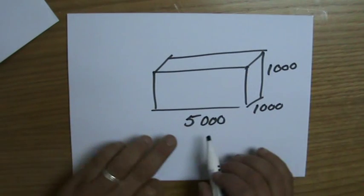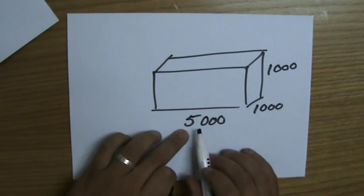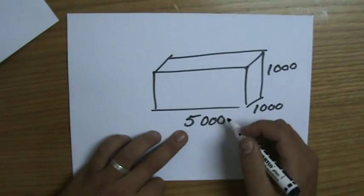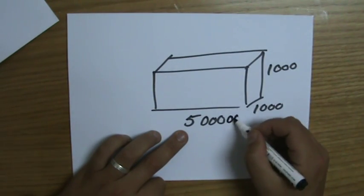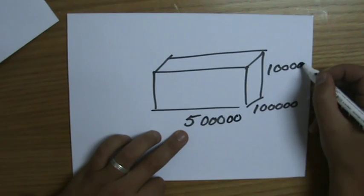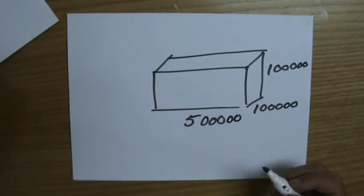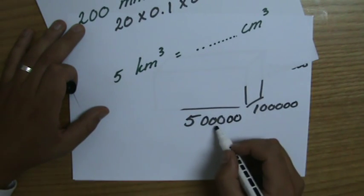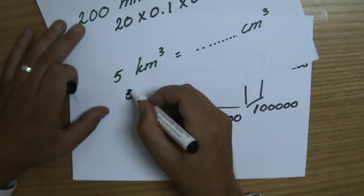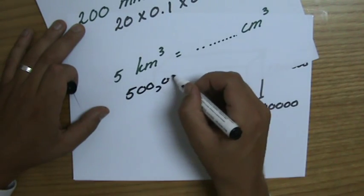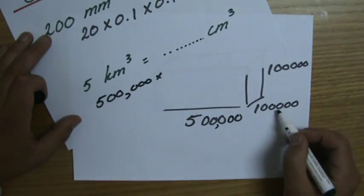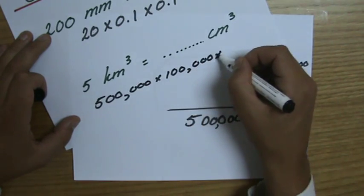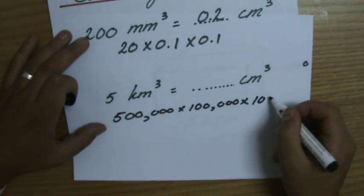From metres to centimetres, I multiply by a hundred. So five kilometres is five hundred thousand centimetres. Now I need to cube that value: five hundred thousand × one hundred thousand × one hundred thousand.